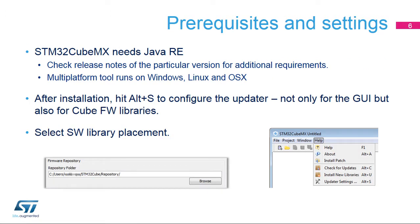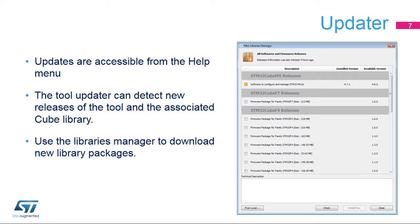Download the STM32CubeMX installer for free from the ST website and install it. Then set your preferences in the settings menu — one menu for the updater and library download (ALT+S), and the other for code generation and integration with development tool chains (ALT+P). Once this setup is completed, a new project can be created. If the internet connection is configured correctly, the tool can update itself as well as the code libraries. Use the Install New Libraries option (ALT+U) to download additional STM32Cube libraries or retrieve older versions.